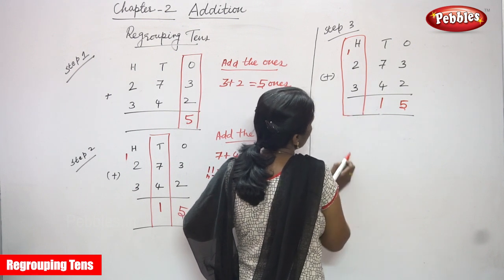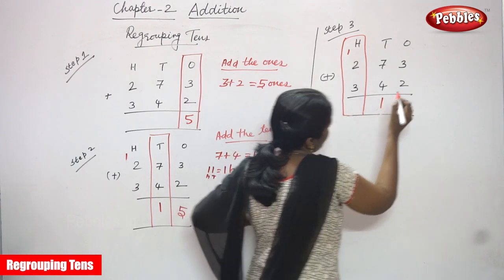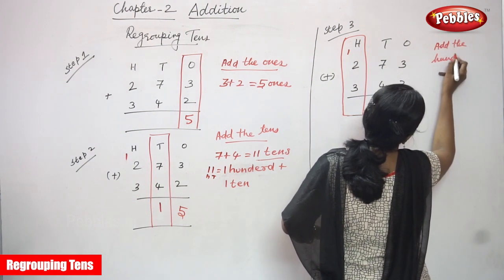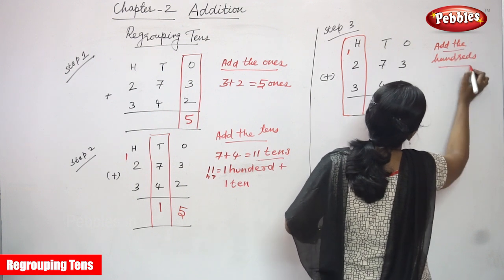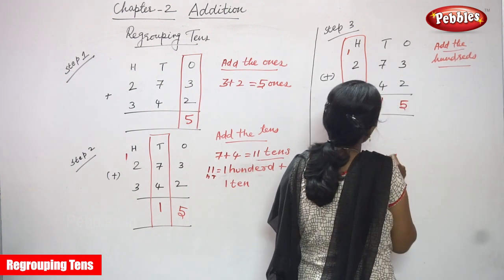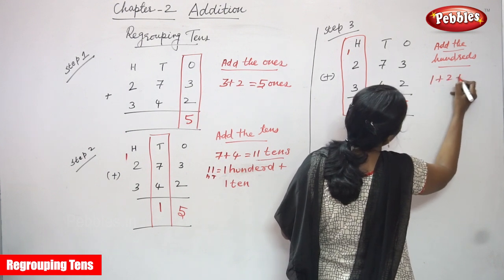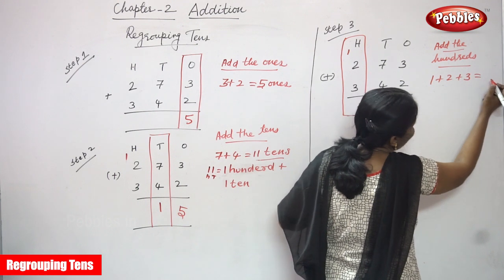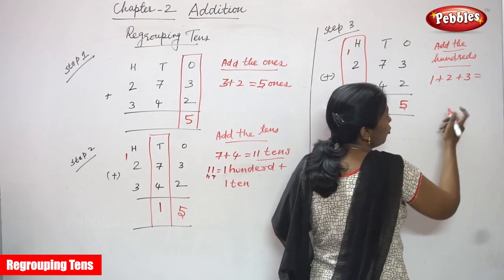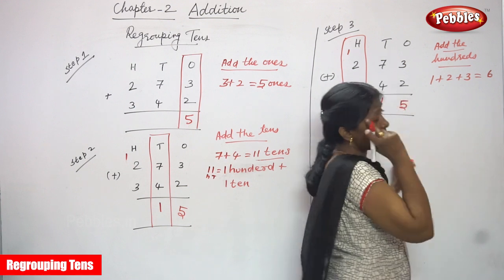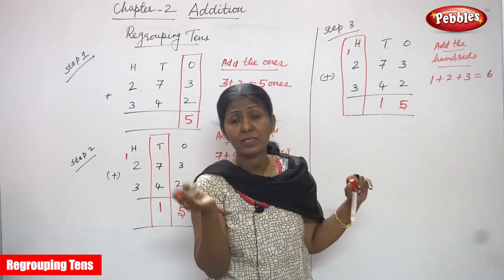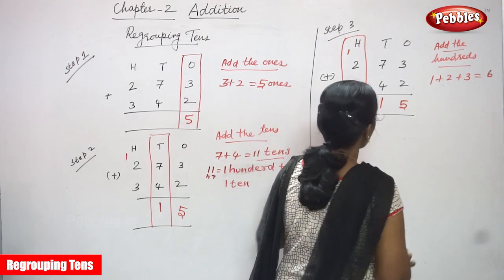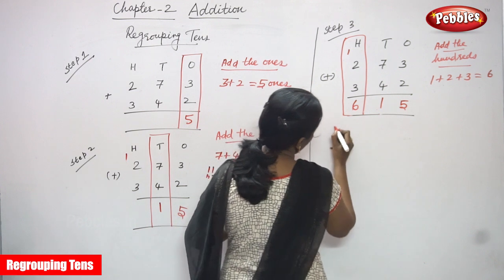Now step three — we highlight the hundreds place and add the hundreds. The numbers to add are: carryover one, plus two, plus three. Three in the mind and three on the finger: after three, four, five, six. Wait — two plus one is three, then three plus three is six. The answer is six.